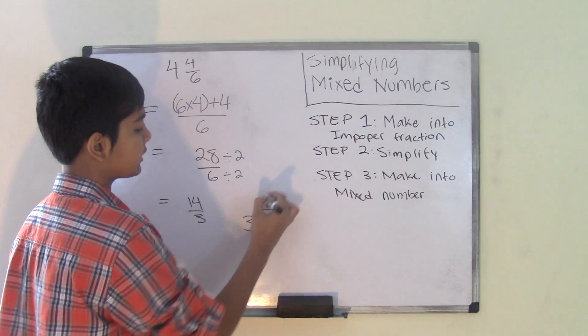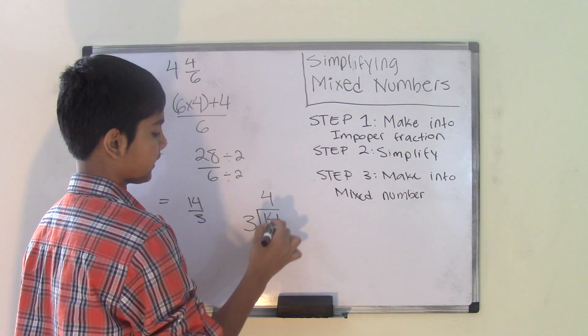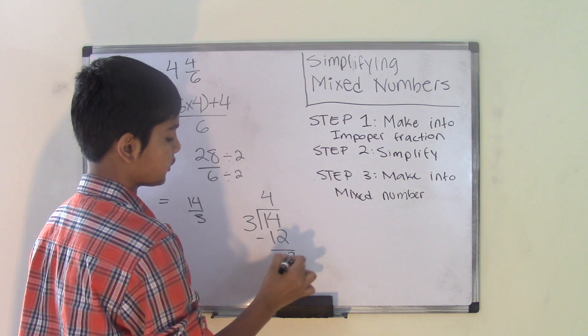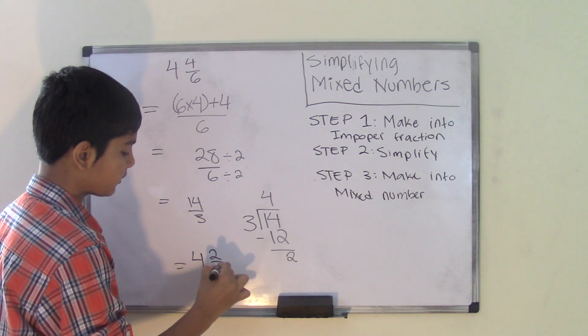So we divide. So we know that 3 times 4 is 12. And then we subtract, so 14 minus 12 gives us 2. So our mixed number is going to be 4 and 2 over 3.